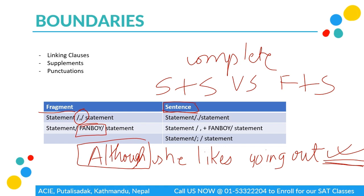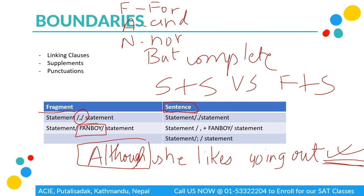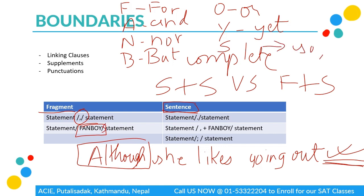FANBOYS stands for: For, And, Nor, But, Or, Yet, So. These conjunctions can be used instead of a comma to show a relationship between a fragment and a sentence. To link two complete sentences, options are: a full stop, a comma plus a FANBOYS conjunction together, or a semicolon. For example: 'He likes to drink tea. She likes going out.' — two separate sentences. Or: 'She likes to drink tea, but he prefers coffee' — comma plus FANBOYS linking two sentences.